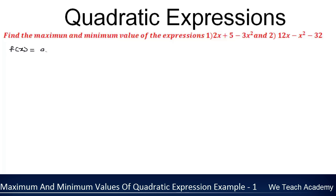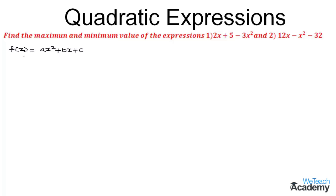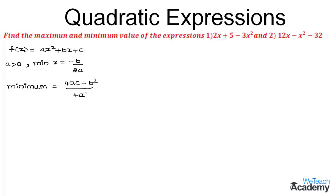We learned that if f(x) = ax² + bx + c, then the coefficient of x², which is a, if it is greater than 0, then f(x) has the minimum value at x = -b/2a, where b is the coefficient of x and a is the coefficient of x². The minimum value of f(x) would be (4ac - b²) / 4a. If the coefficient of x² which is a is less than 0, then it has the maximum value at x = -b/2a, and the maximum value of f(x) would be (4ac - b²) / 4a.